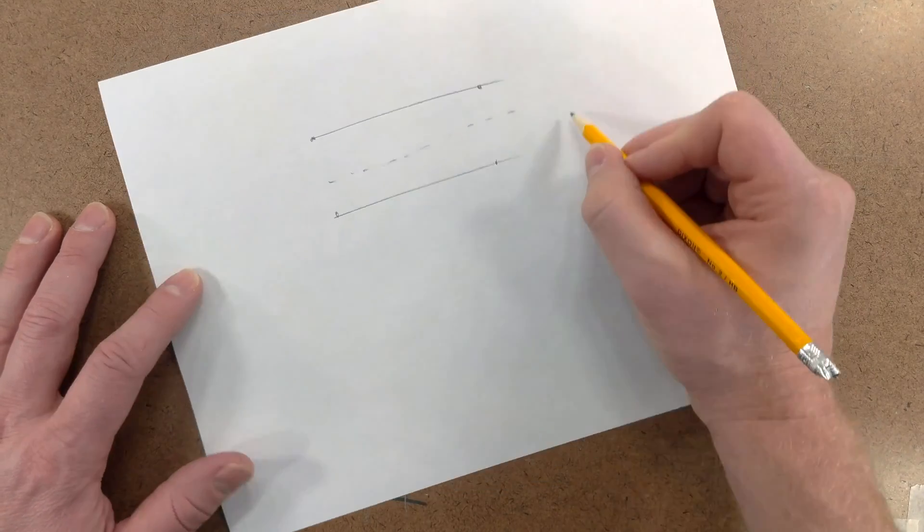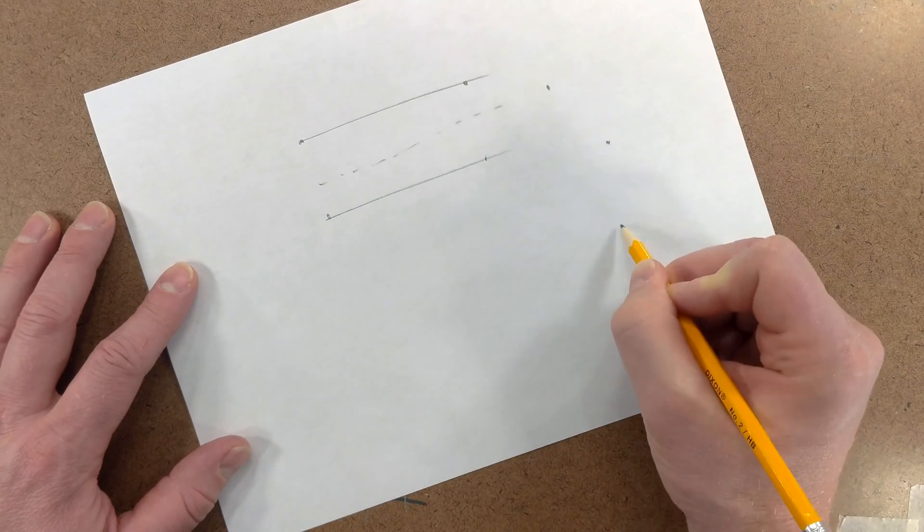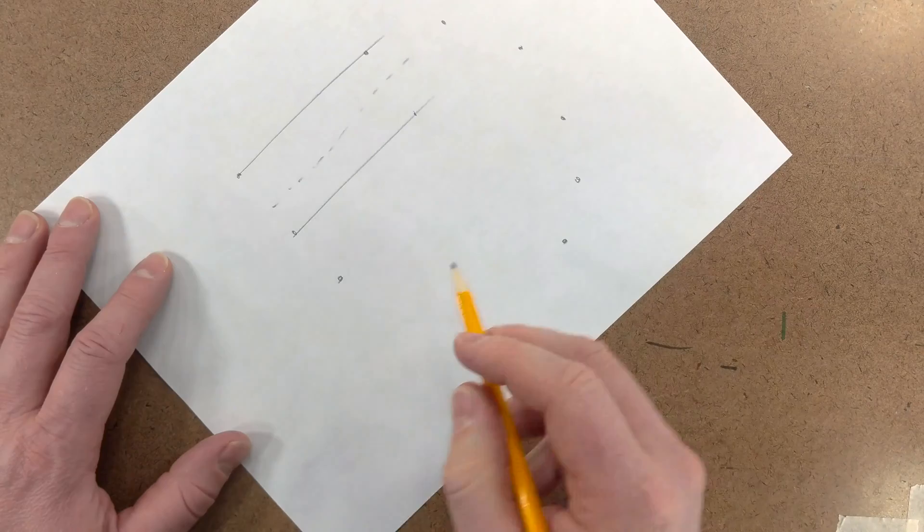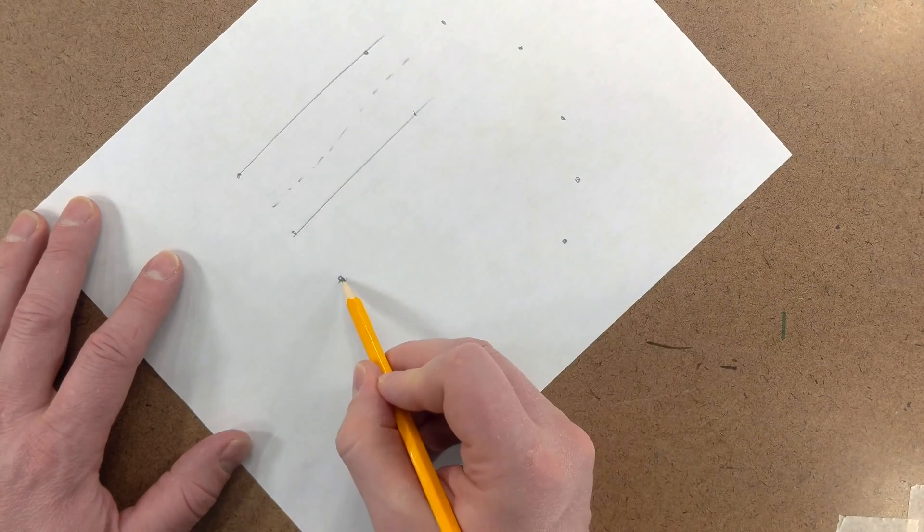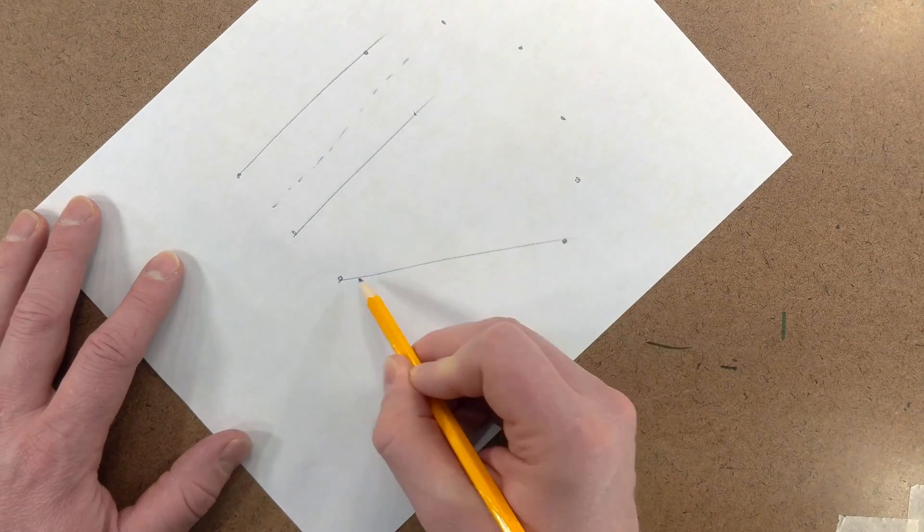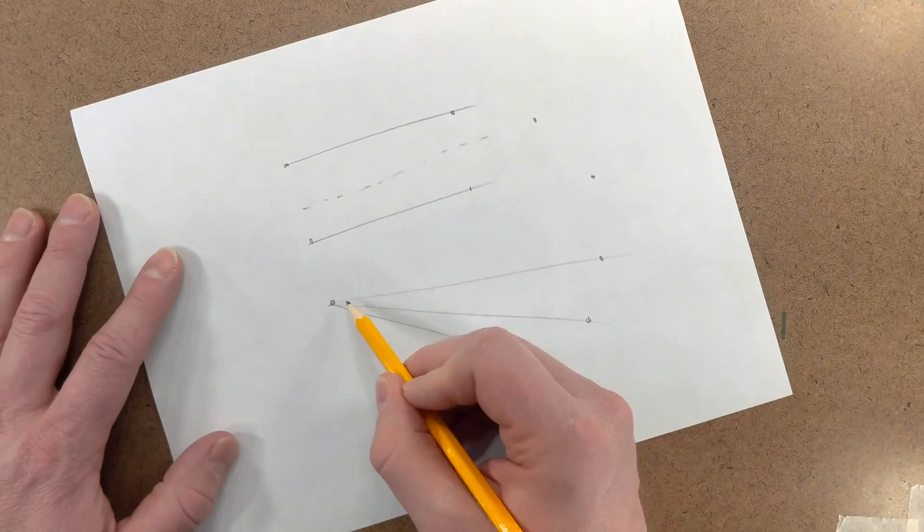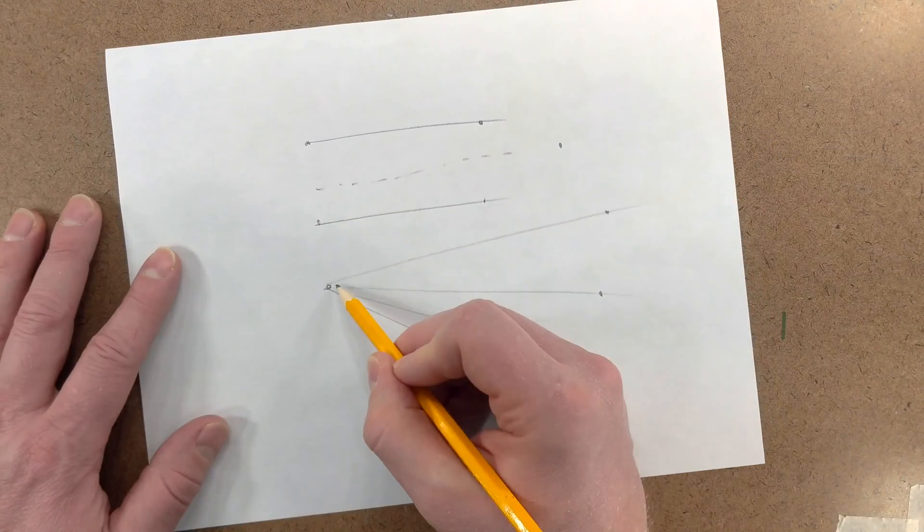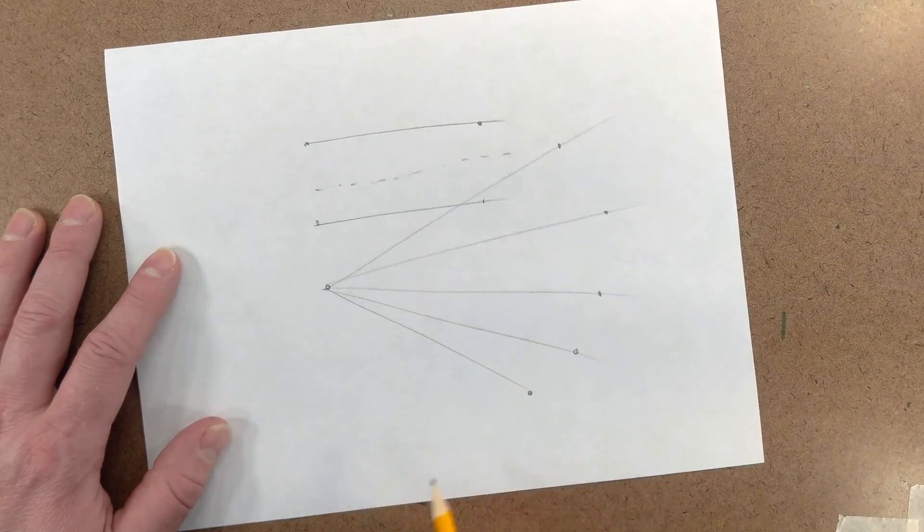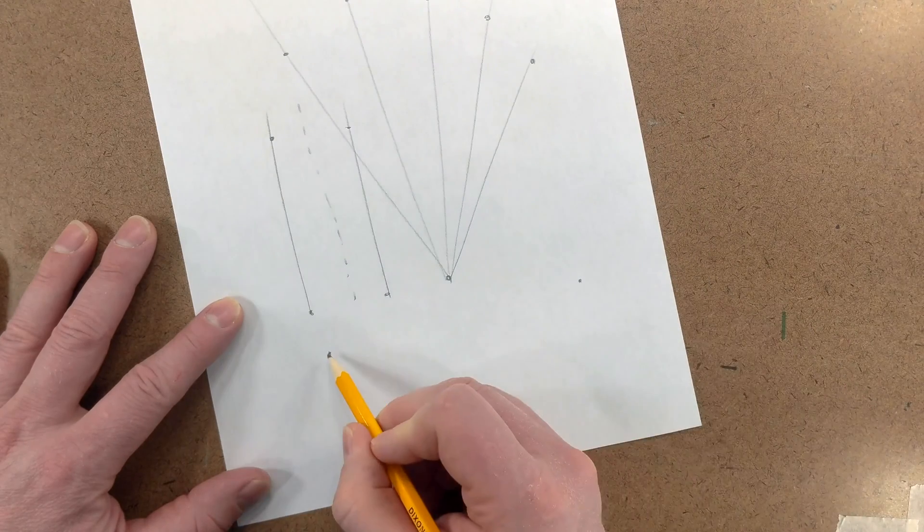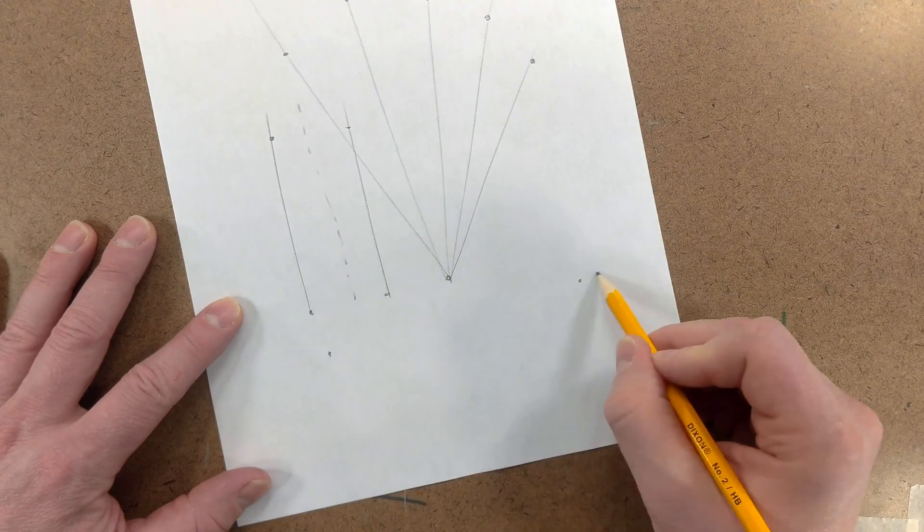Another exercise we can do is we can make an arc. And then put a dot. And then we can start at one line. And then we can continue to do this. Keep putting dots at different parts on your page and then trying to connect them. Make the dots farther and farther apart.